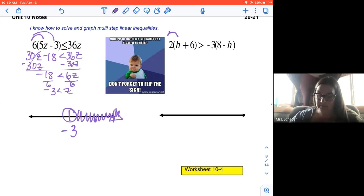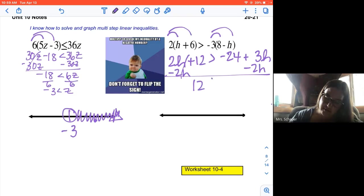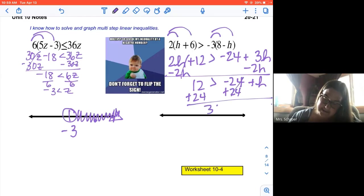One more. Here we go. We're going to distribute. Who would have thought we'd be doing this much distributing, right, when we learned it at the beginning of the year? It's crazy how it keeps coming back. And for those of you wondering if it's going to actually continue into next year, the answer is yes. You'll be distributing next year. So I have that two H plus 12 is equal to negative 24 plus three H. I'm going to subtract two H from both sides. 12 is greater than negative 24 plus H. We'll add 24 to both sides. 36 is more than H.